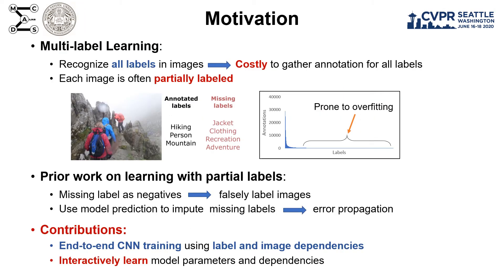Multi-label learning requires large annotations for every label. However, most datasets contain only partial labels for images. While one can treat missing labels as negatives, this leads to low-performance classifiers. Also, using model prediction to impute missing labels has the risk of propagating errors.